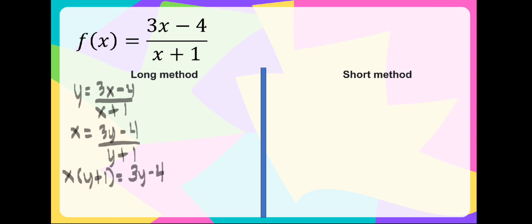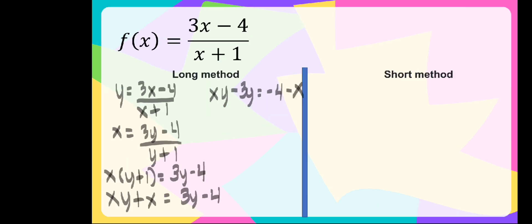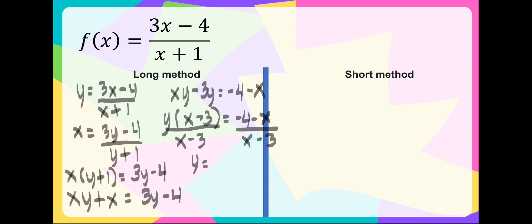Using the distributive property, let us evaluate the expression on the left side: xy plus x is equal to 3y minus 4. Now let us combine the like terms — they have the same variable. We have xy, and 3y is transposed to the left side, giving us minus 3y, equal to negative 4, and x transposed to the right side giving negative x. Separating y: y times the quantity x minus 3 is equal to negative 4 minus x. Dividing both sides by x minus 3, y is equal to negative 4 minus x over x minus 3. That is the inverse function.